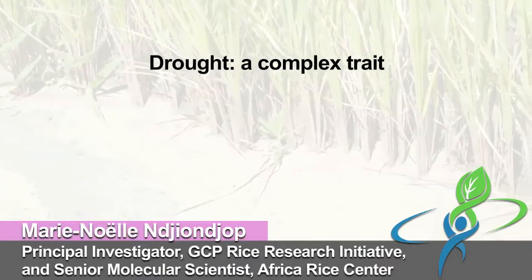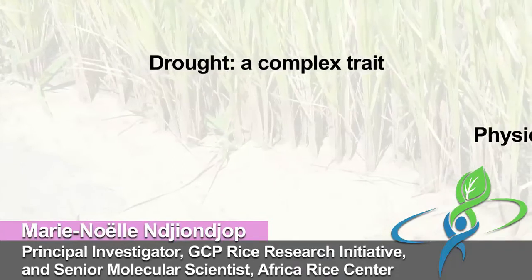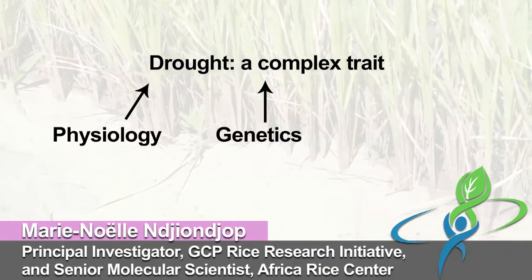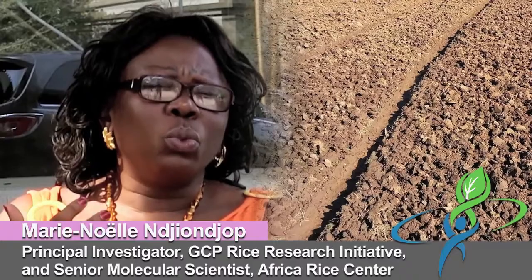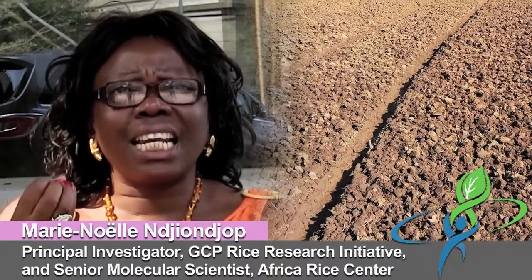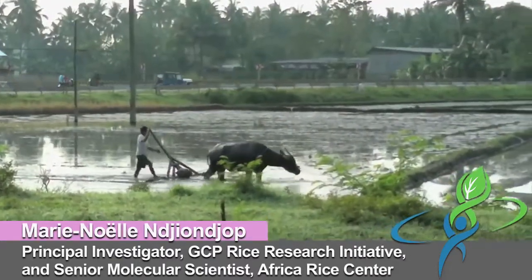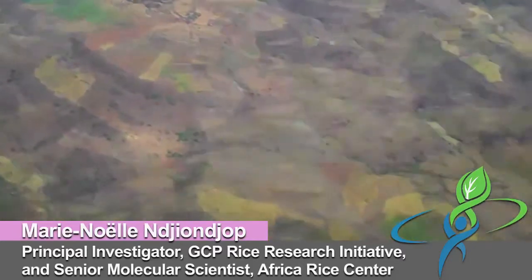Drought is a complex trait — it has physiological, genetic, and environmental components. So you really need all the necessary tools and infrastructure to tackle that trait. Through this project, the Generation Challenge Program was able to provide us all the necessary infrastructure to measure water and to measure drought in the environment where we are working.